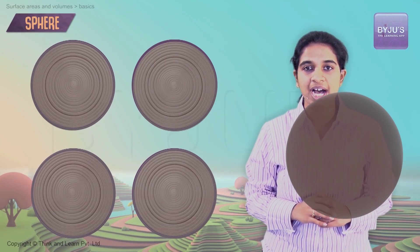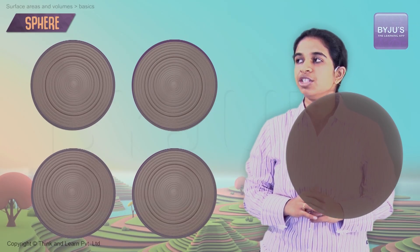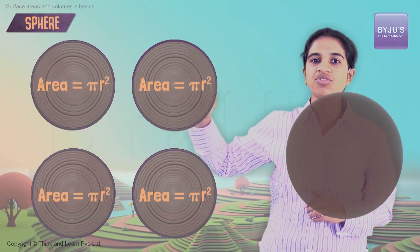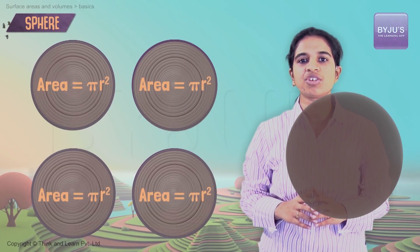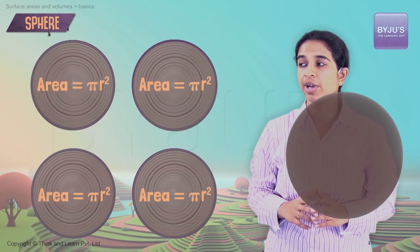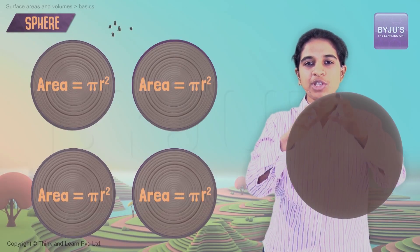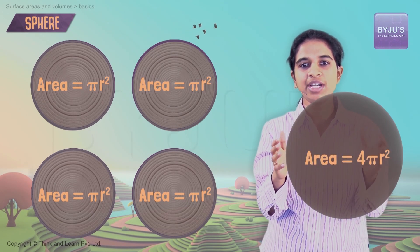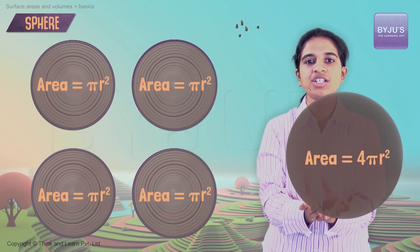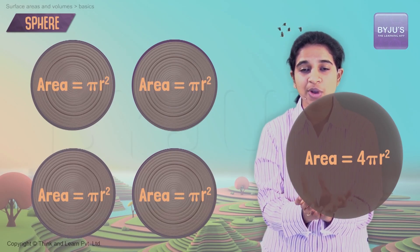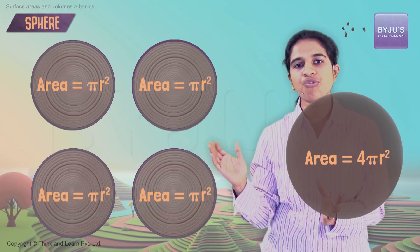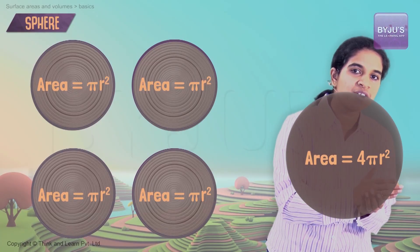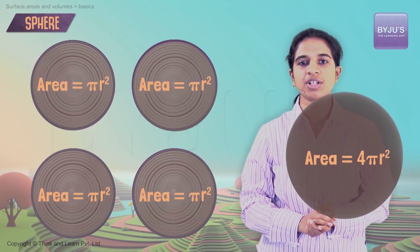So the thread required to wrap one sphere equals the thread required to wrap four flat circles, all with the same radius r. The area of each circle is πr², so the total area is 4πr². This means the surface area of the sphere is 4πr². Since the entire surface is curved, this 4πr² is both the curved surface area and the total surface area.